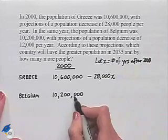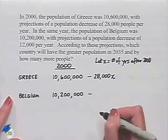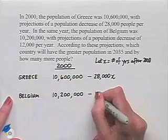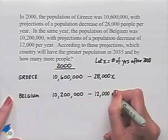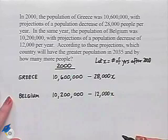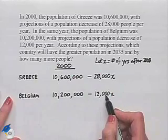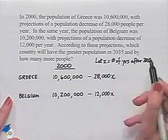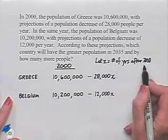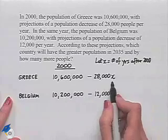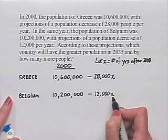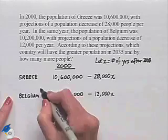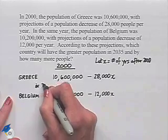In Belgium, we have a similar situation. We have a decrease in population, but their rate of decrease is 12,000 per year, so we're going to subtract 12,000 times the number of years that have passed. In order to compare these two populations, we're interested in what occurs in the year 2035. That's going to be 35 years after the year 2000, so we'll substitute the value of 35 into each expression.